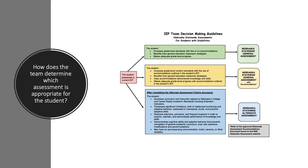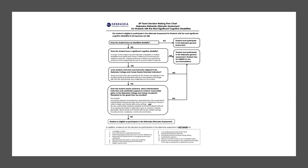The staff at the Nebraska Department of Education has created a flowchart to help IEP teams determine which assessment is appropriate for each child with a disability. This flowchart illustrates the process for determining if a child qualifies for the alternate assessment. There are four questions to answer, and the answer to all four must be yes in order for a student to take the alternate assessment.